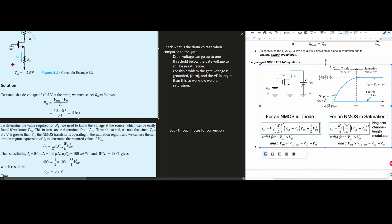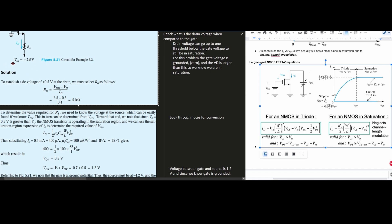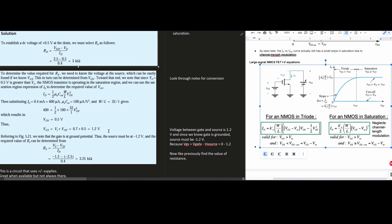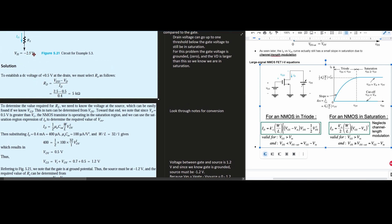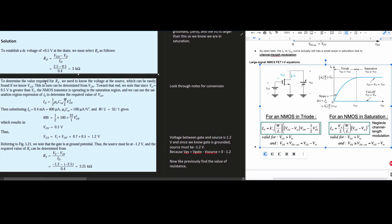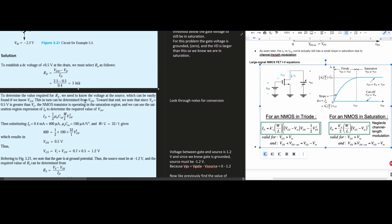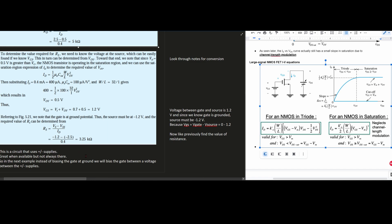Now we just plug it in to find the resistor value. We basically have our voltage source minus the voltage SS over our ID. So we're going to get negative 1.2 minus our negative 2.5 for VSS, all divided by ID which is 0.4 milliamps. We plug it all in and we get 3.25 kilo ohms.